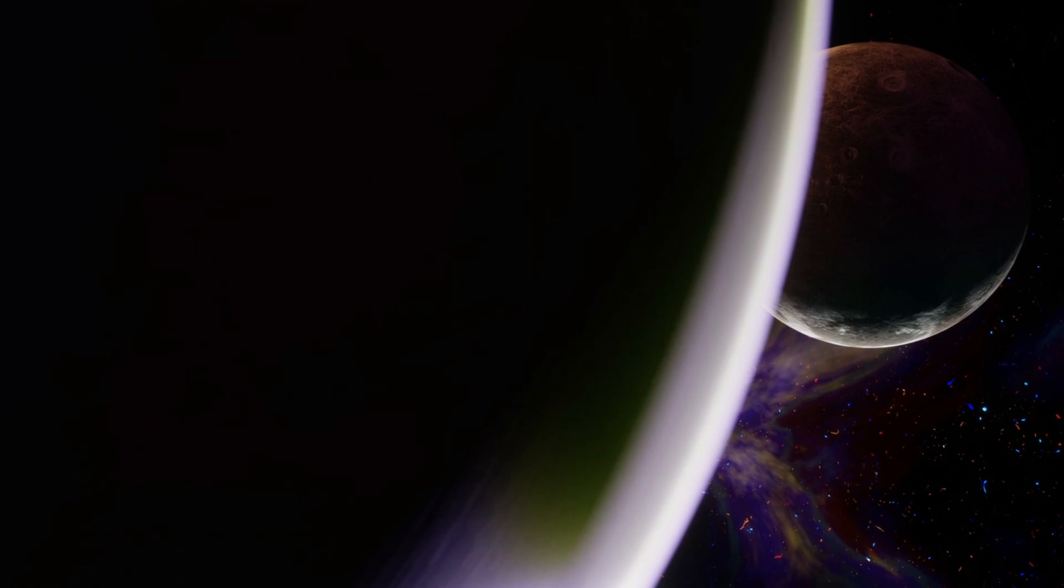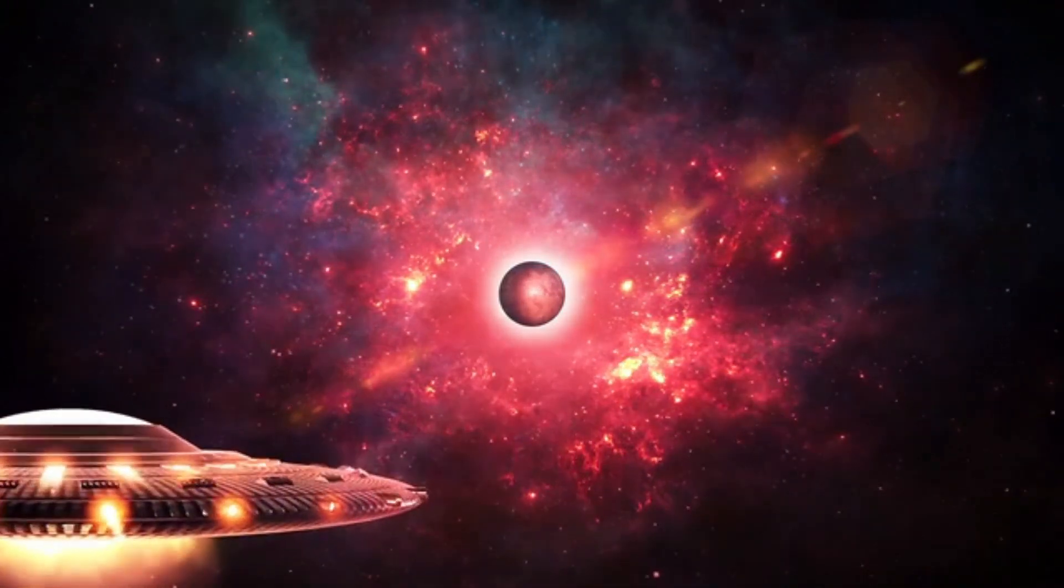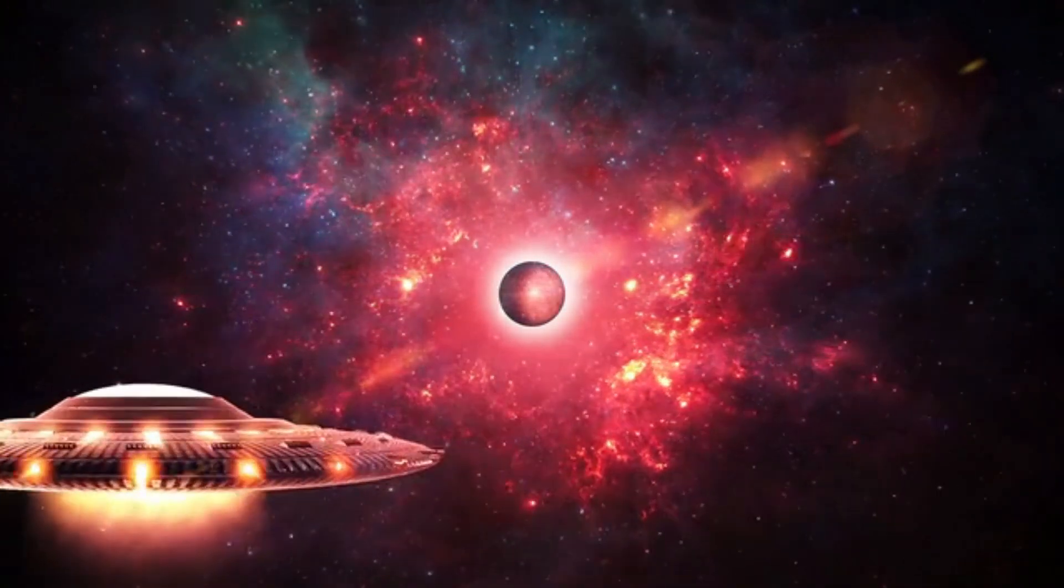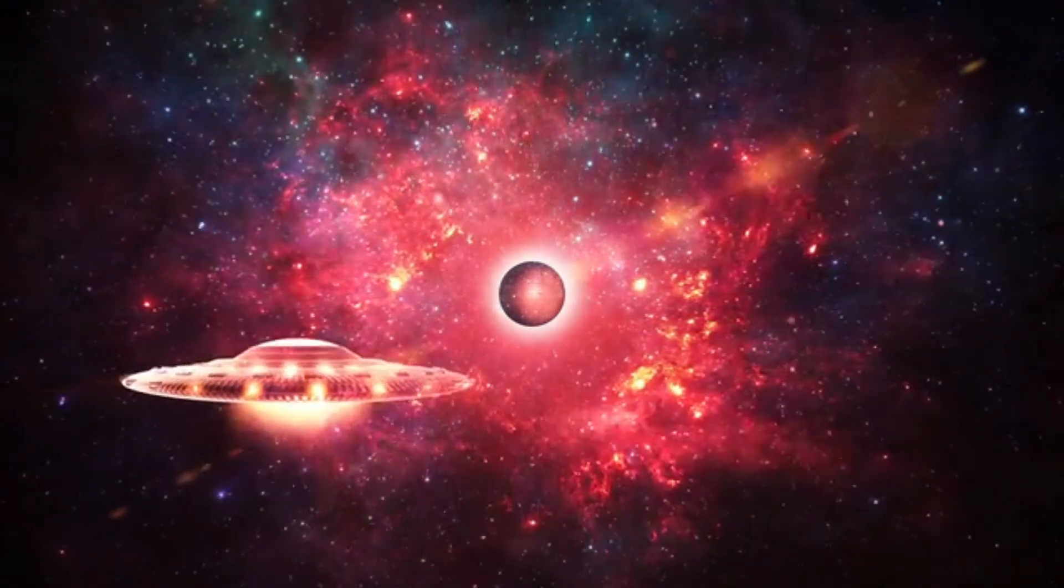The TRAPPIST-1 star system, discovered in 2016, has intrigued scientists and those studying potential extraterrestrial life. Its main appeal lies in the existence of seven rocky planets orbiting a red dwarf star.